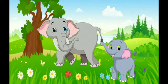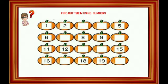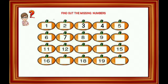Let's revise one more time. Find out the missing number. One, two — which number is missing? Number three. Then, which number is missing? Four, five, six, seven, eight, nine, ten, eleven.